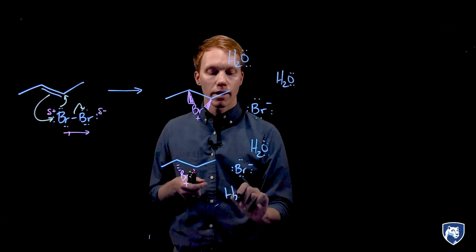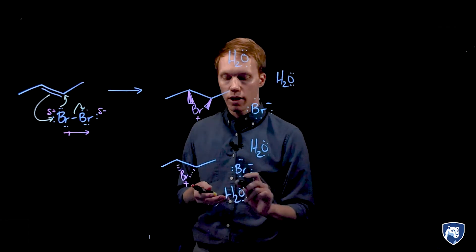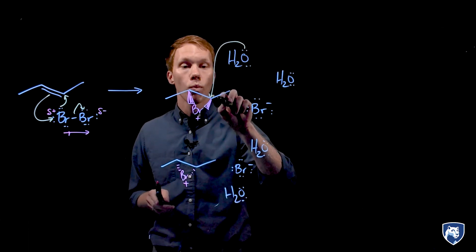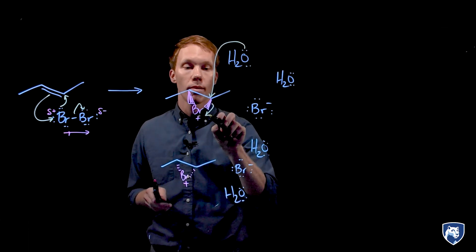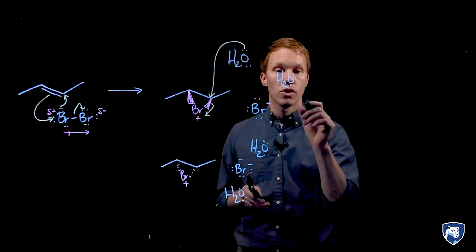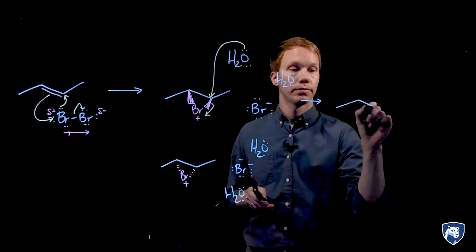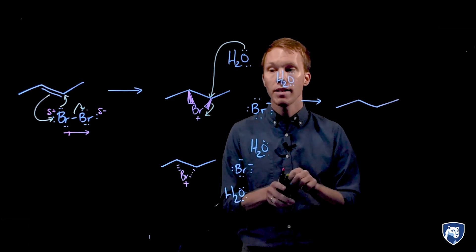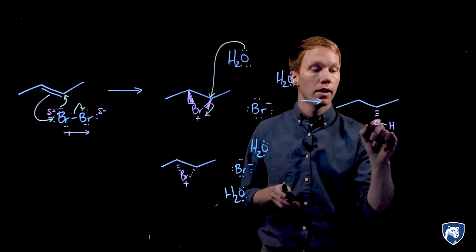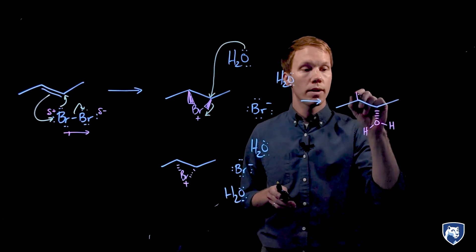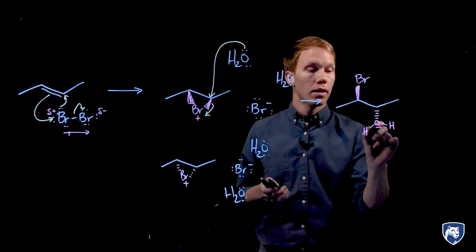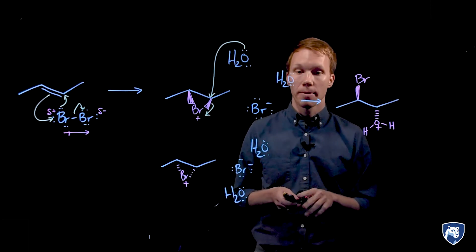So I'm going to add a few water molecules here to show that there are many, many around here. Water has lone pairs on that oxygen and can serve as a nucleophile. You could imagine that the water would intercept this carbon electrophile and form a new carbon-oxygen bond. That carbon-oxygen bond must form from the opposite face of the bromonium ion because that bromonium ion is blocking that opposite side. This oxygen is now cationic.